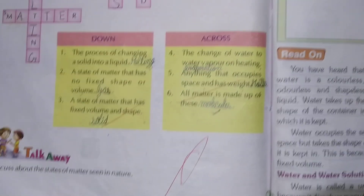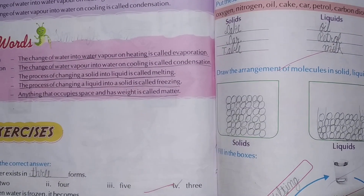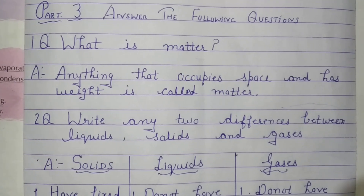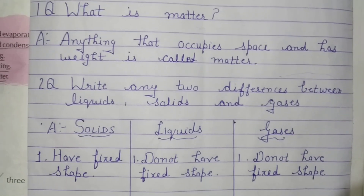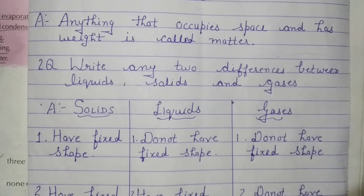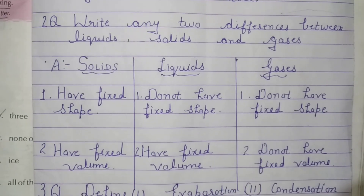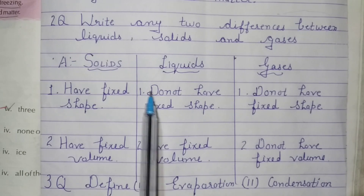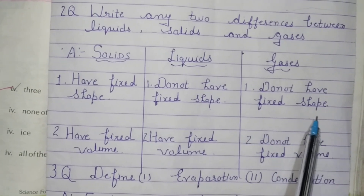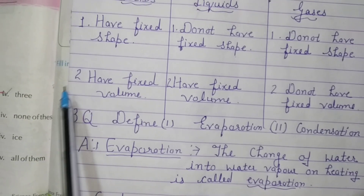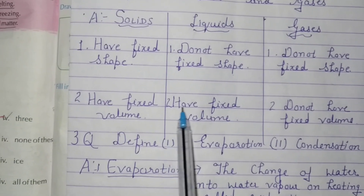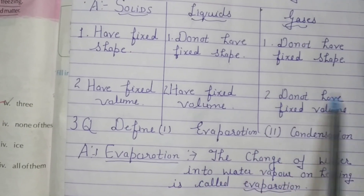Okay students, now take all your copies. Write the date, lesson number, and name of the lesson. First question: What is matter? Answer: Anything that occupies space and has weight is called matter. Second question: Write any two differences between solids, liquids, and gases. Solids have a fixed shape; liquids and gases do not have a fixed shape. Solids have fixed volume; liquids have fixed volume; but gases do not have fixed volume.